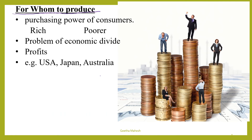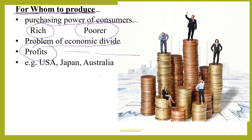Third one is for whom to produce. In a market economy or free economy, producers will produce goods and services for those people who are able to offer higher price. By considering the purchasing power of consumers they decide for whom to produce. In the market economy they usually produce goods and services for rich people and neglect the poorer section of the society. This leads to the problem of economic divide — the gap between rich and poor is going to increase. Good examples of market economy are USA, Japan, and Australia.